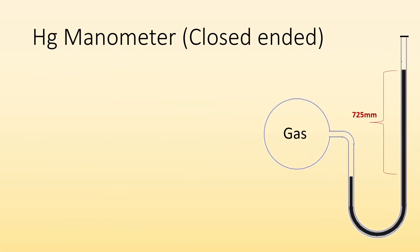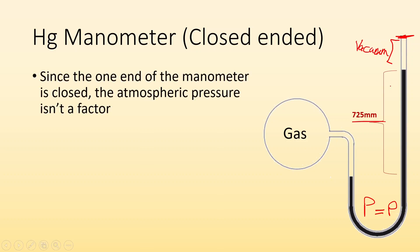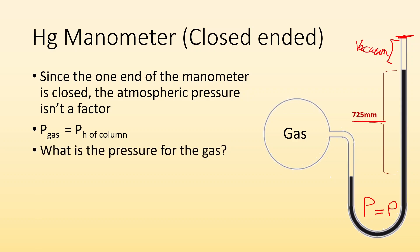Now a closed-ended manometer example. The top is closed, so there's just a vacuum up there — nothing — which changes the scenario. The pressure on the left still has to equal the pressure on the right, but now the right side has no atmospheric contribution; it's just from the height difference in the column. So the pressure of the gas is simply equal to the pressure from the height of the column — in this case, 725 millimeters of mercury. Convert to another unit if needed.